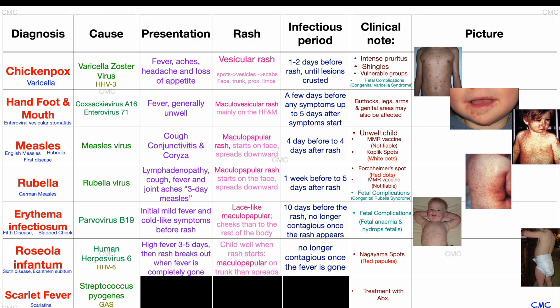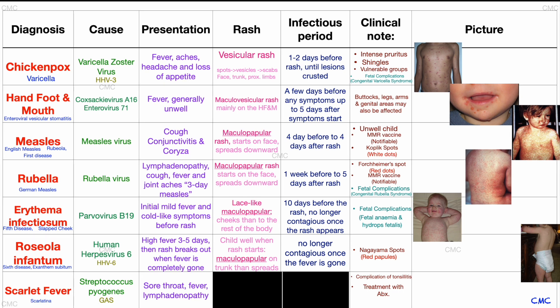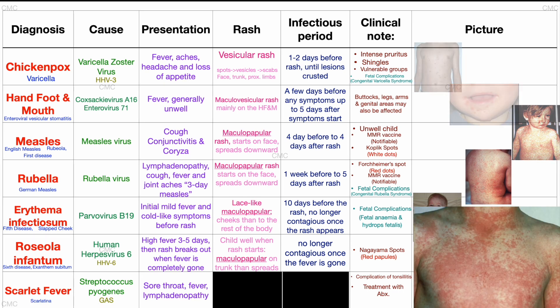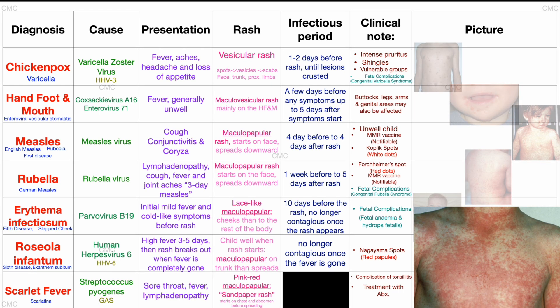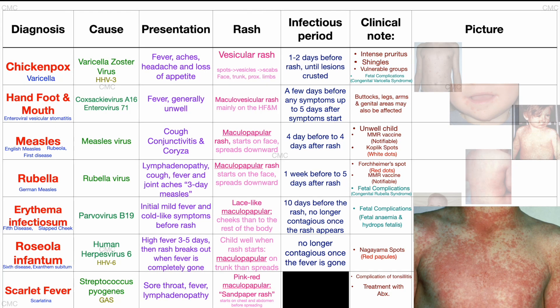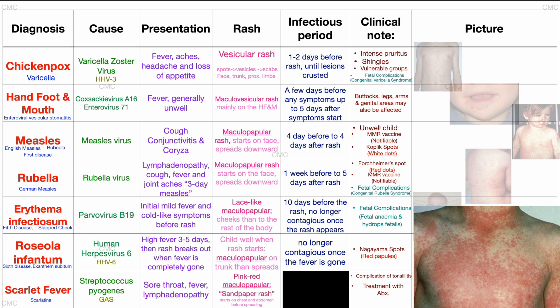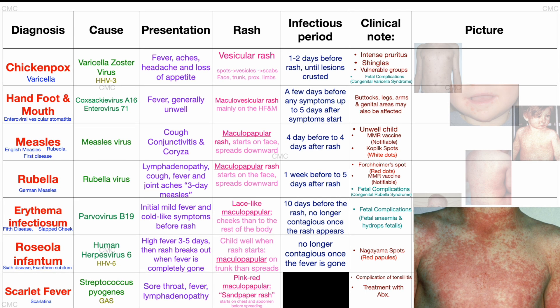This childhood exanthem is simply a fairly uncommon complication of the very common acute bacterial tonsillitis, which classically presents with sore throat, fever and lymphadenopathy. This is yet another maculopapular rash; however, it has a very distinctive feature in that it feels like sandpaper in texture when examined, which starts on the chest or abdomen before spreading.